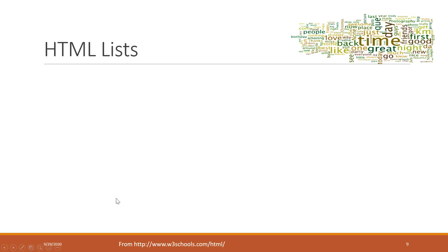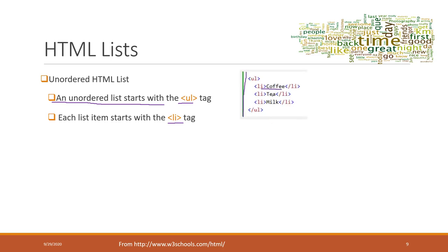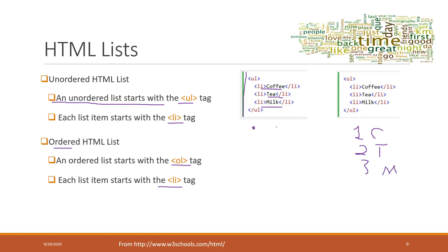We can also display information as lists. An unordered list means all items start with a dot — it uses the UL tag, and each item uses an LI tag. An ordered list means items start with numbers — it uses the OL tag, and each item still uses LI. For example, an ordered list would show 1. Coffee, 2. Tea, 3. Milk; an unordered list would show the same items with dots.